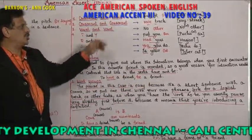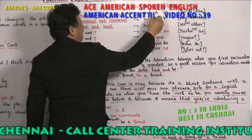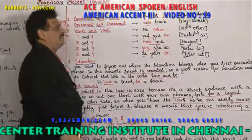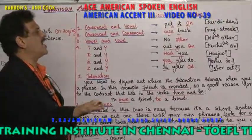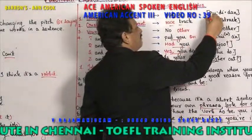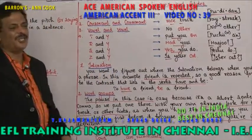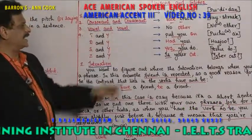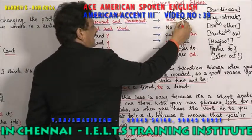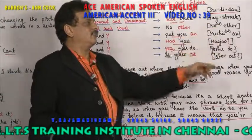For example, consonant and a vowel: a word ends with a consonant T, the next word starts with a vowel O — 'put it on.' You say 'put it on' — the words connect. You don't say 'put — it — on' separately. Consonant plus consonant: CE sounds as S, T is a consonant — 'race track.' You say 'race track.'